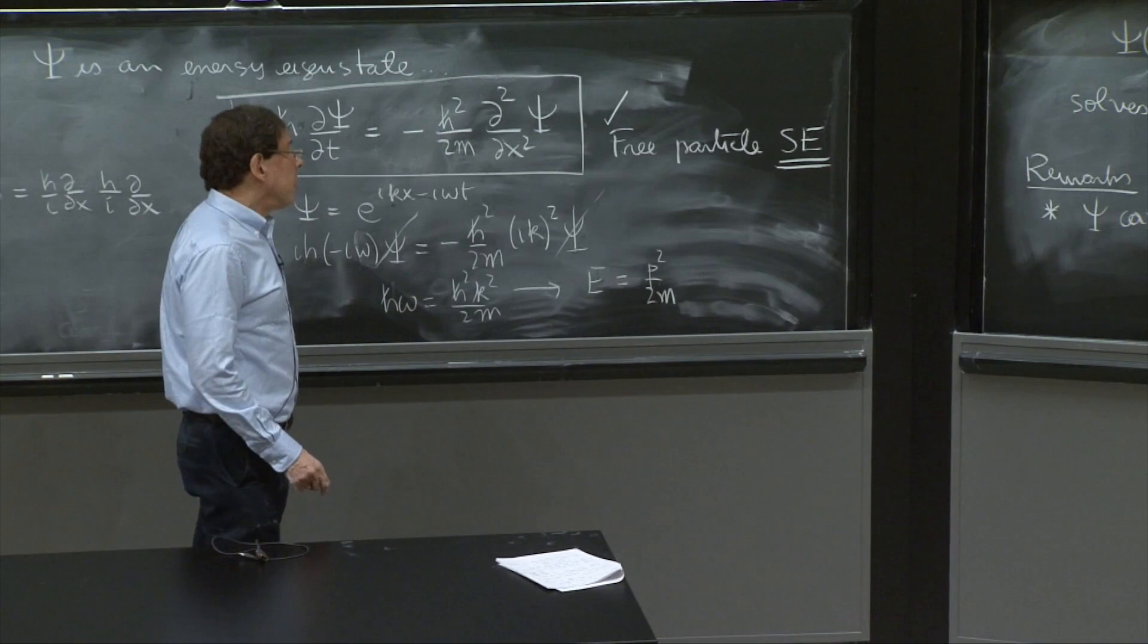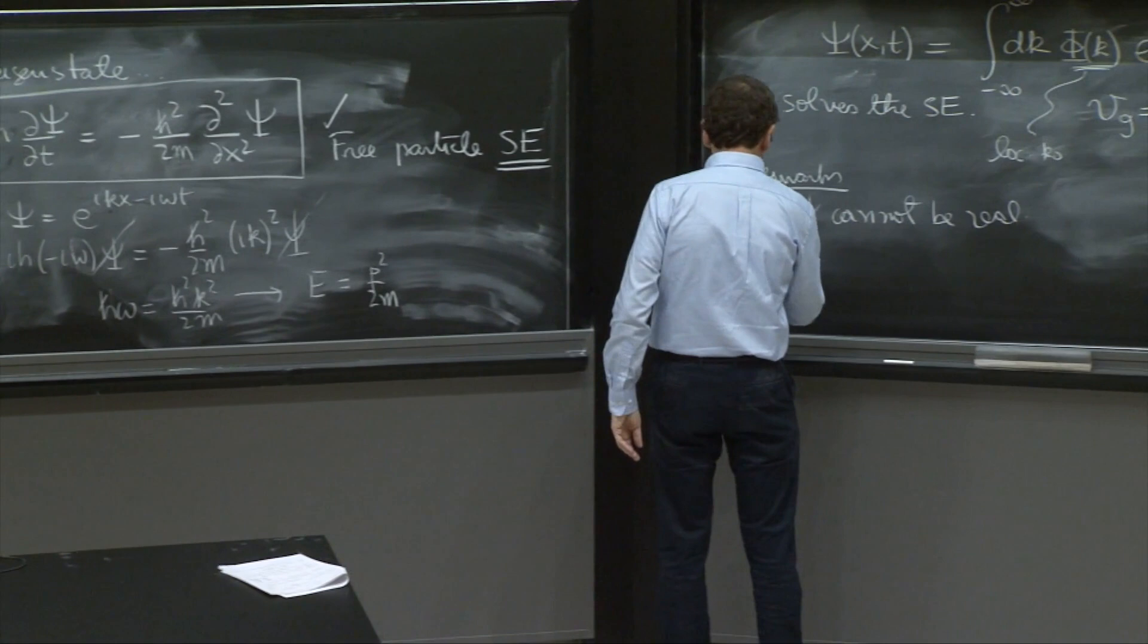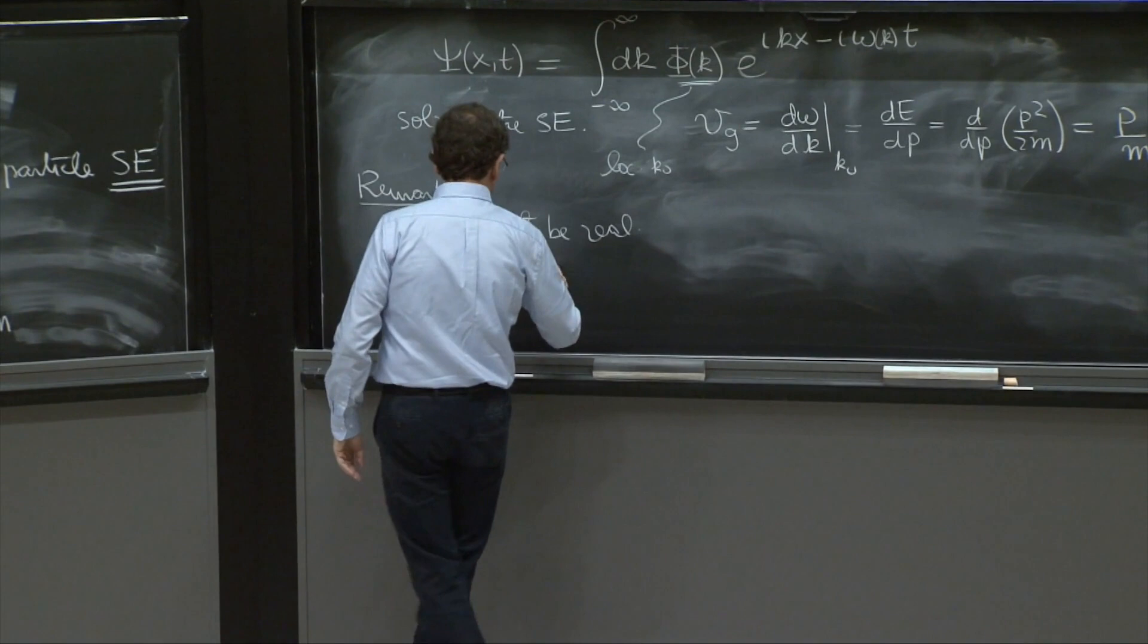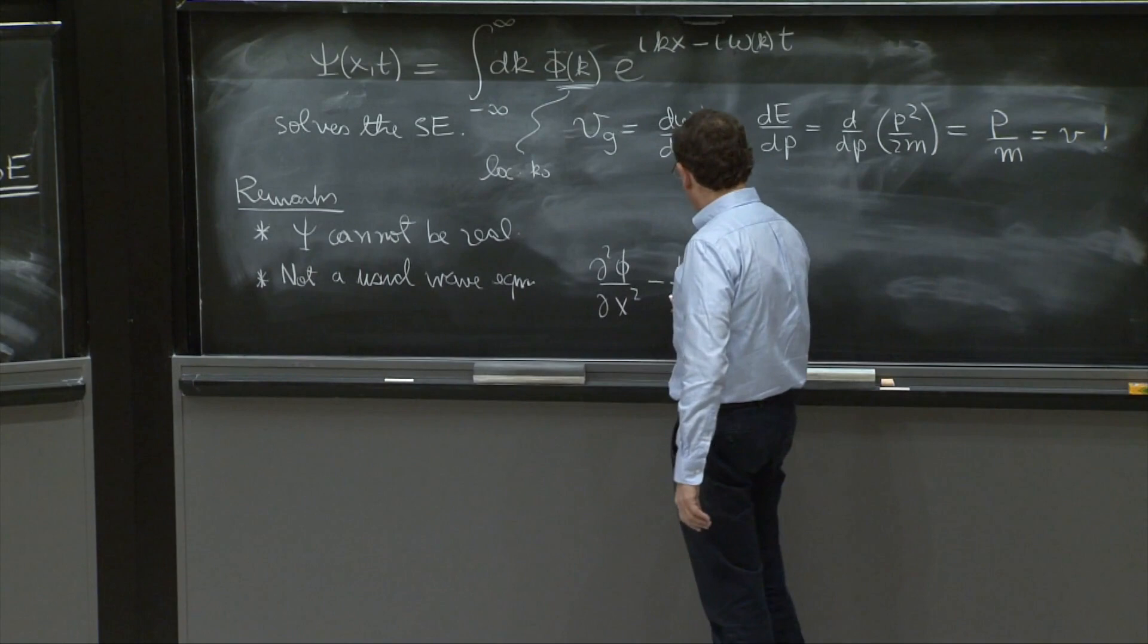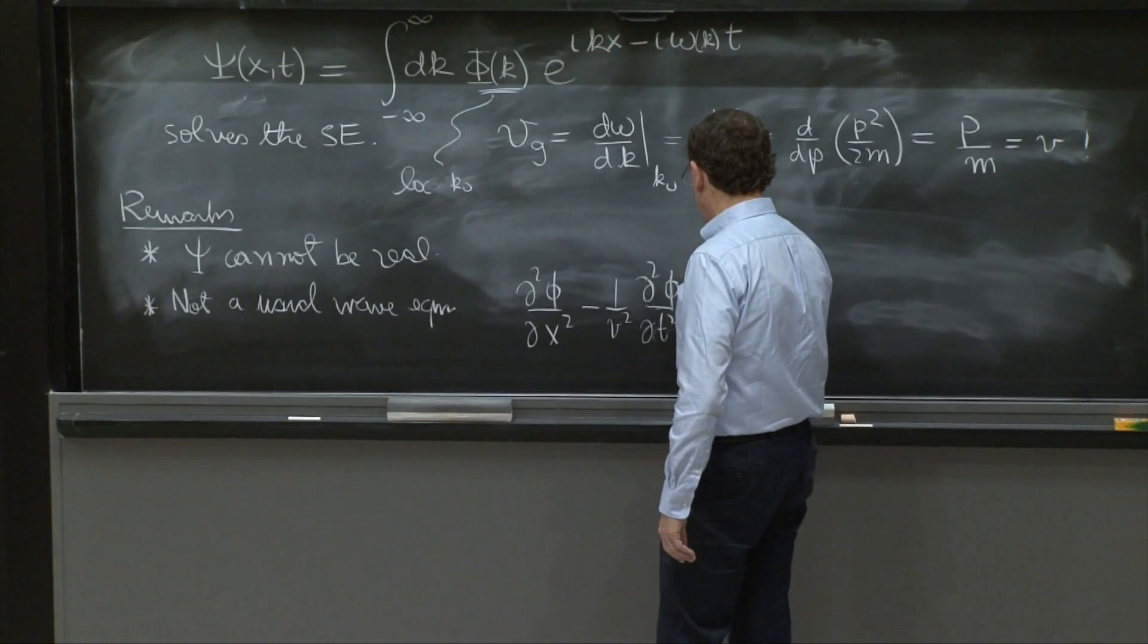Another remark is that this is not a wave equation of the usual type, not a usual wave equation. And a usual wave equation is something like d second phi dx squared minus 1 over v squared d second phi dt squared equals zero. That's a usual wave equation.